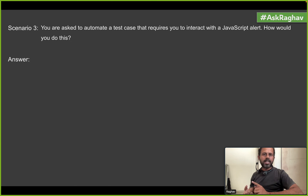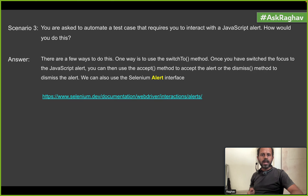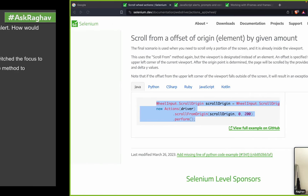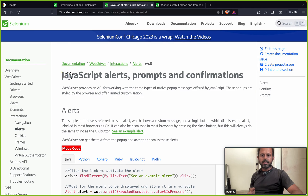In Selenium you can interact with all JavaScript alerts, pop-up boxes, prompt boxes, and confirmation boxes. There are different ways — you can use the alert interface of the Selenium library. You can check examples on the official website of Selenium. If I show you here under JavaScript alerts, prompts and confirmations, you can see how the alert interface is used.